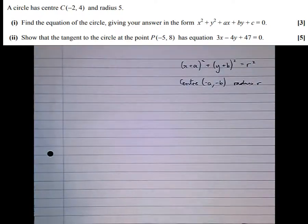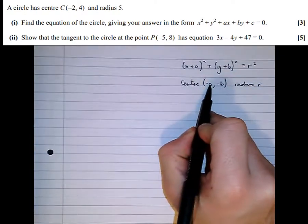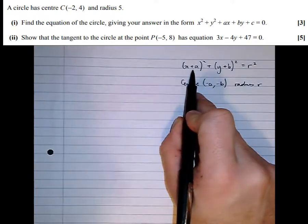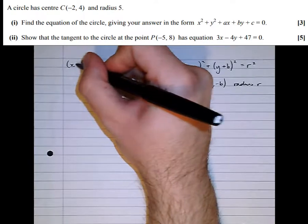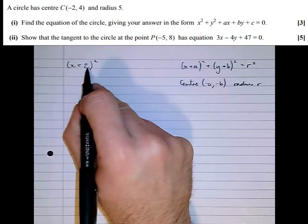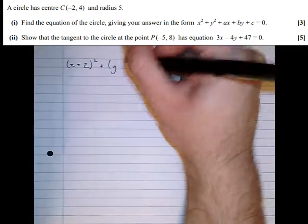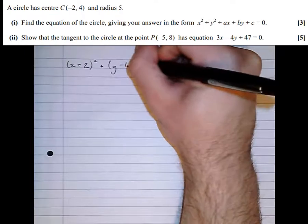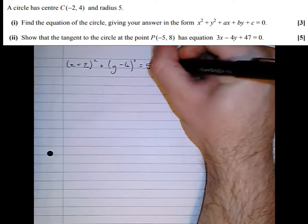So we can use this to find the equation of the circle with the features we've been given. If that's minus a, what goes in the bracket is plus a, so we'll change the sign. The x bracket is going to be (x+2)² since it has x-coordinate -2, and (y-4)² since it has y-coordinate 4, equals the radius squared.